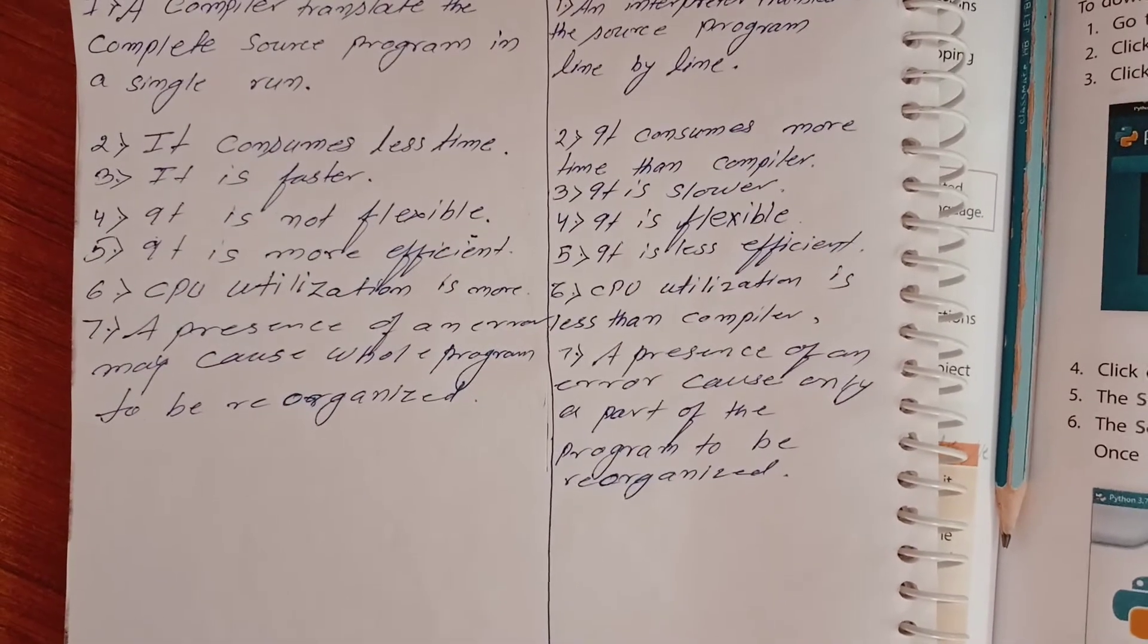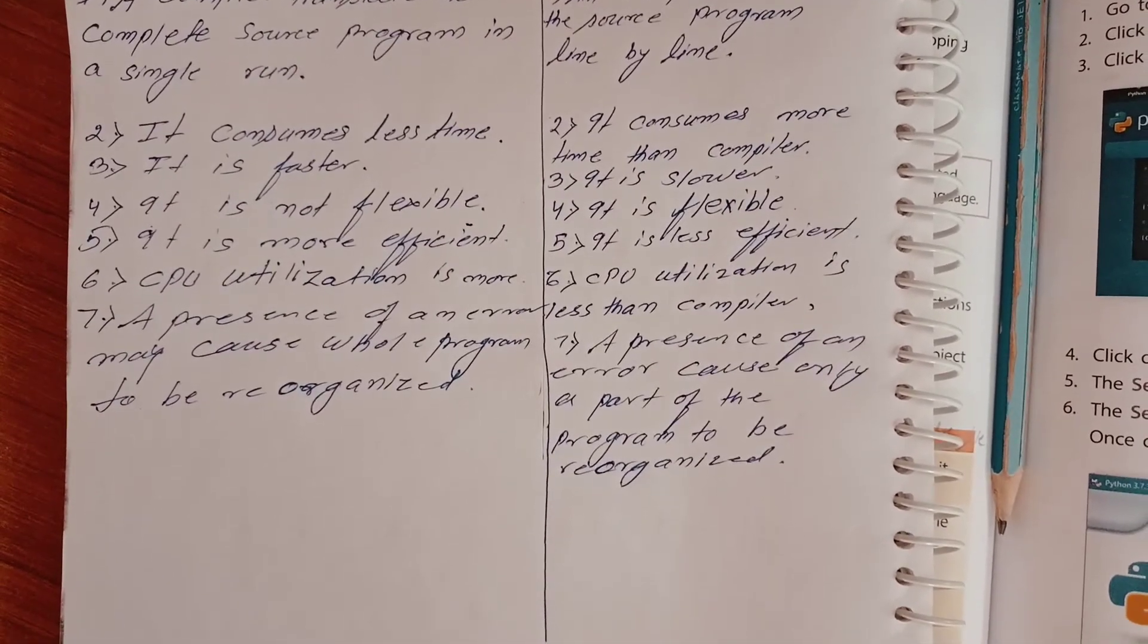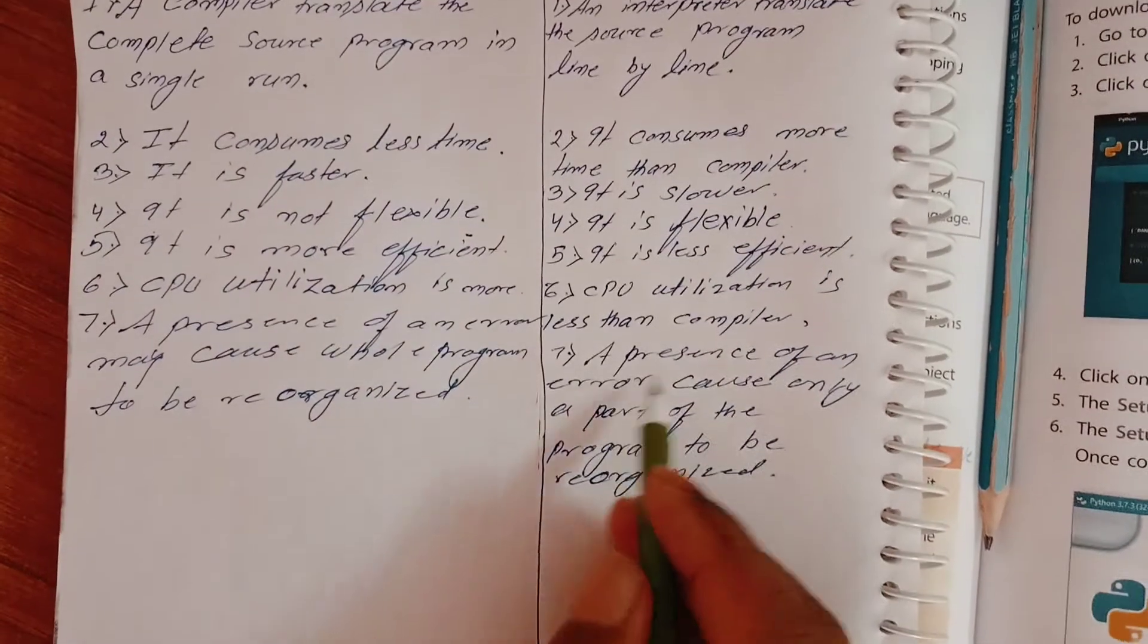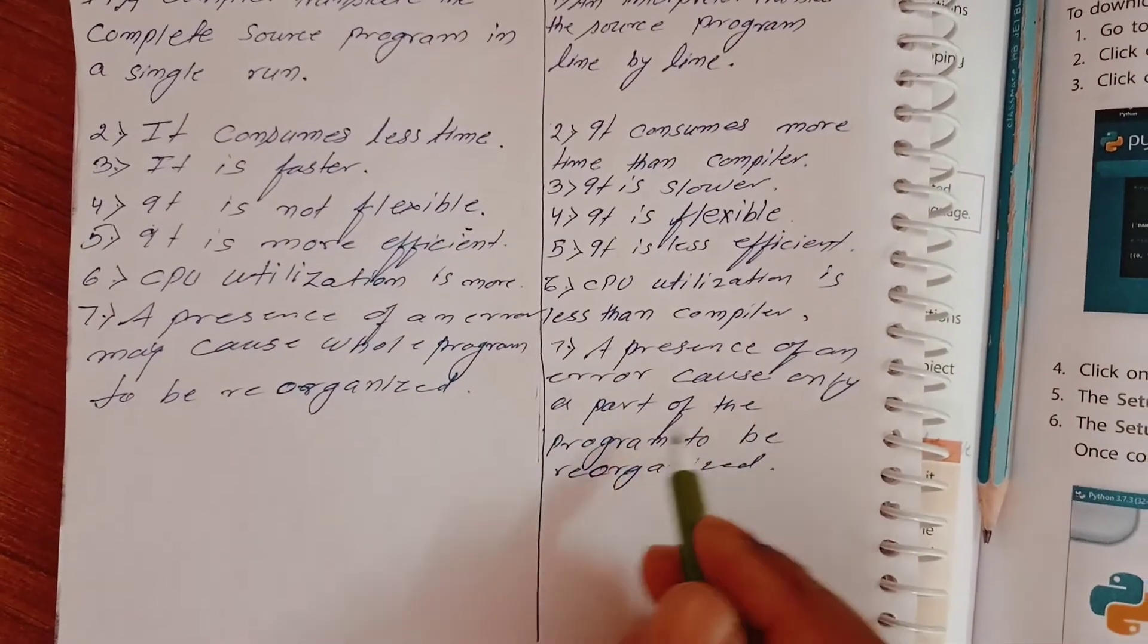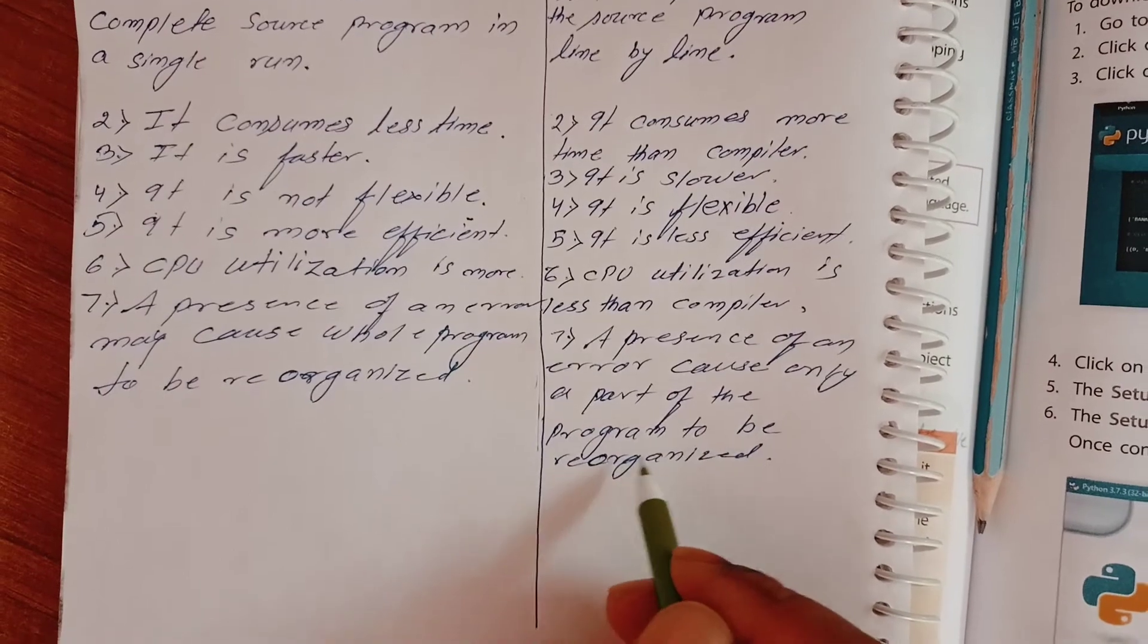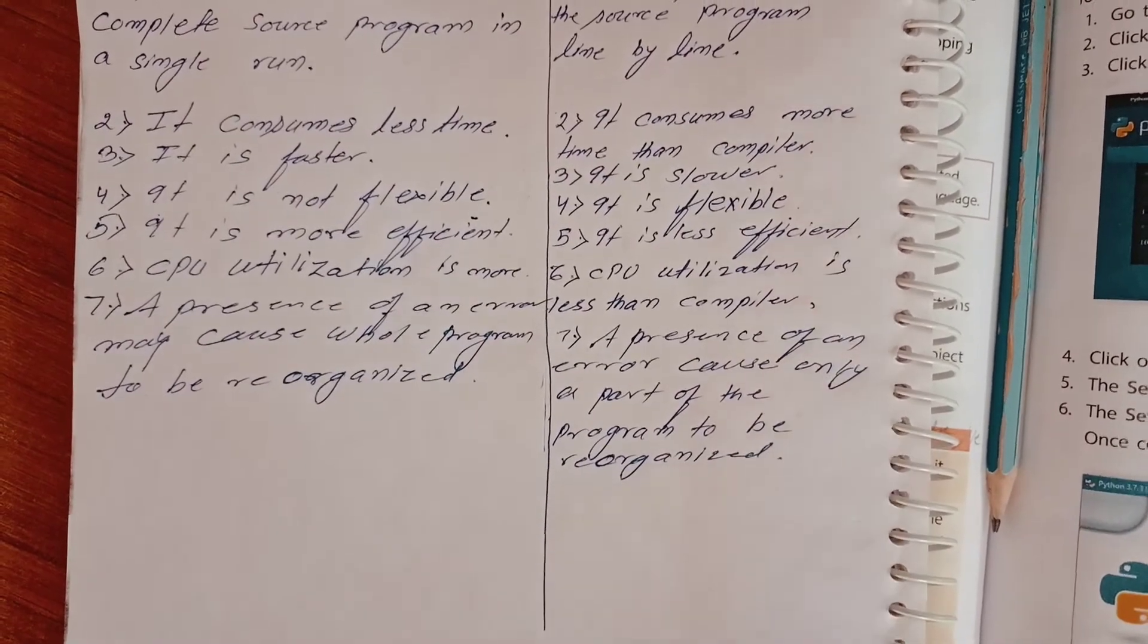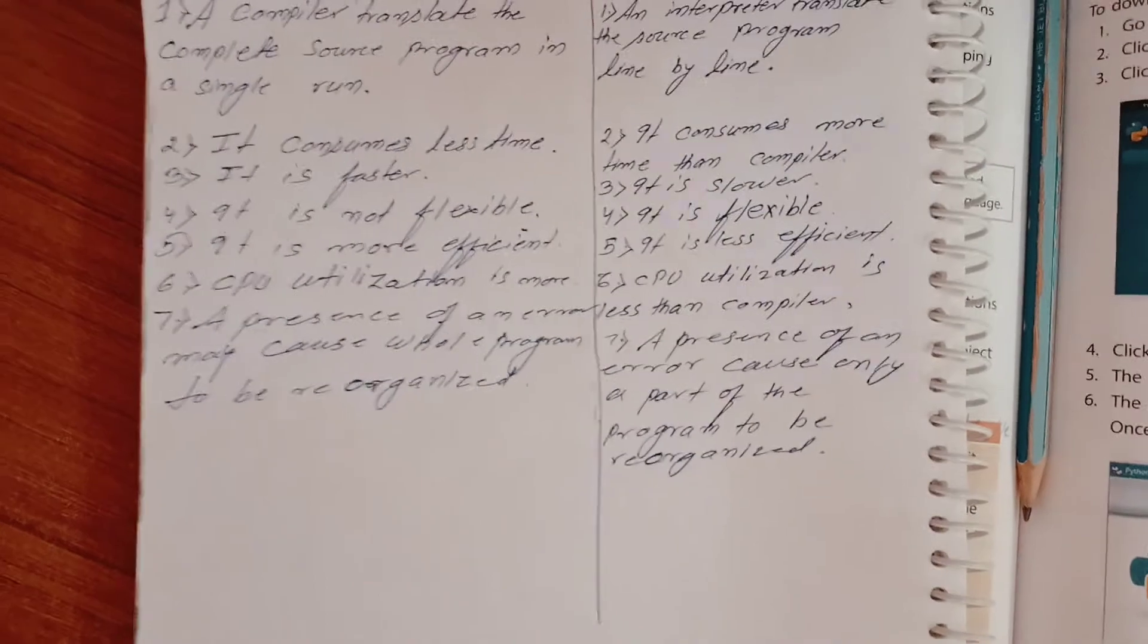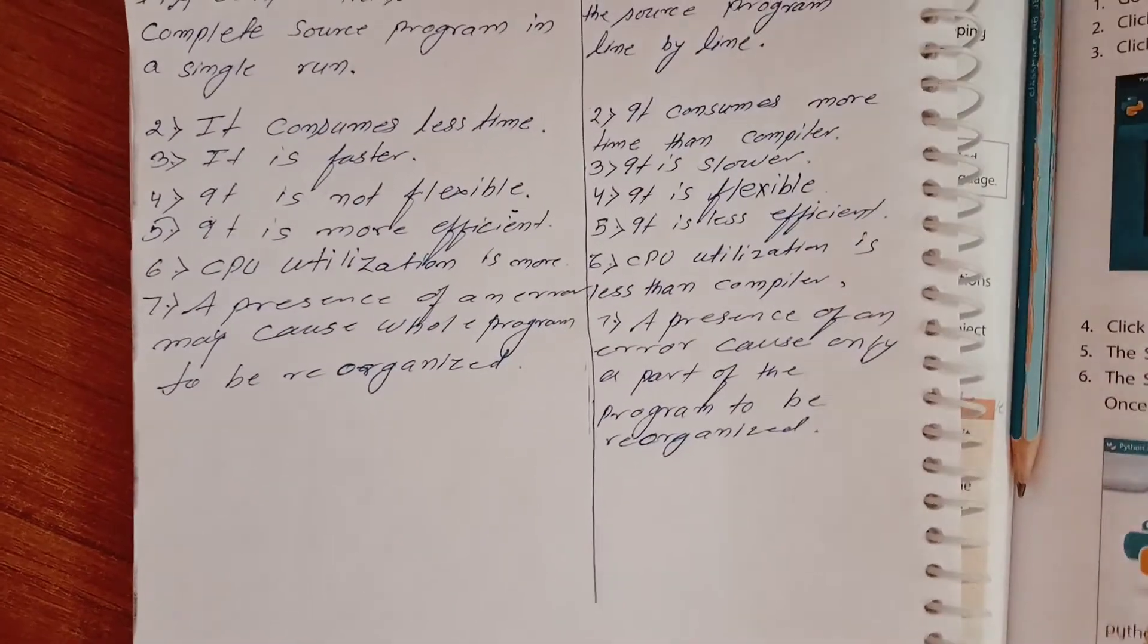Emergence of an error causes only a part of the program to be recognized. So this is the difference between compiler and interpreter. Thank you.